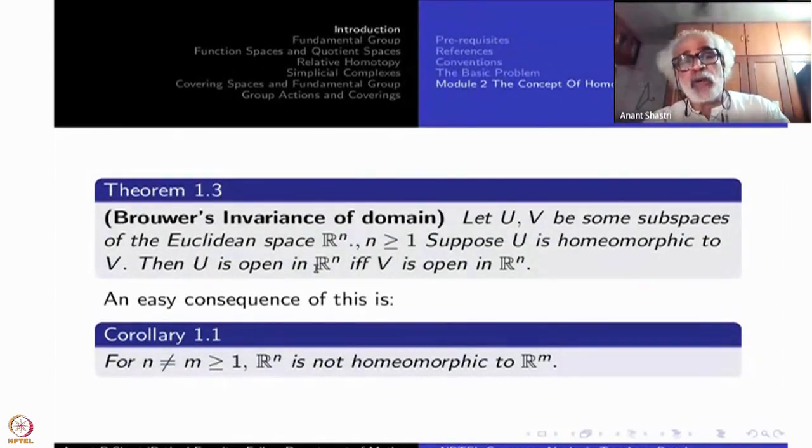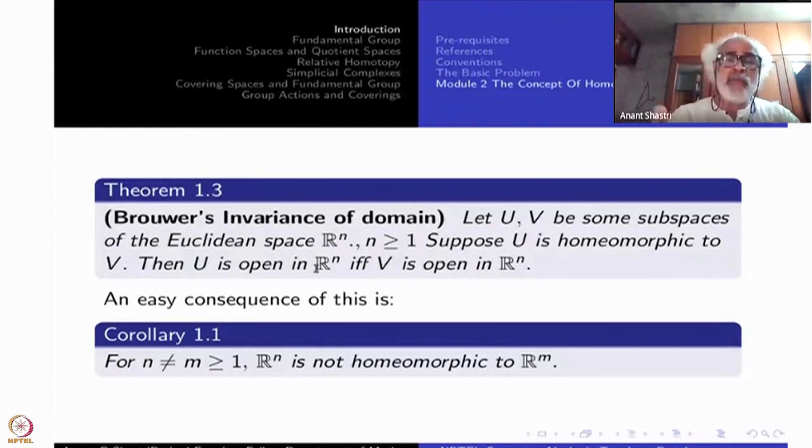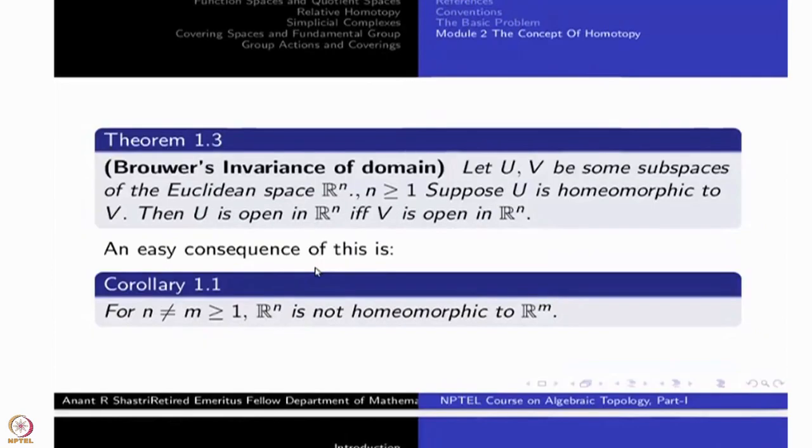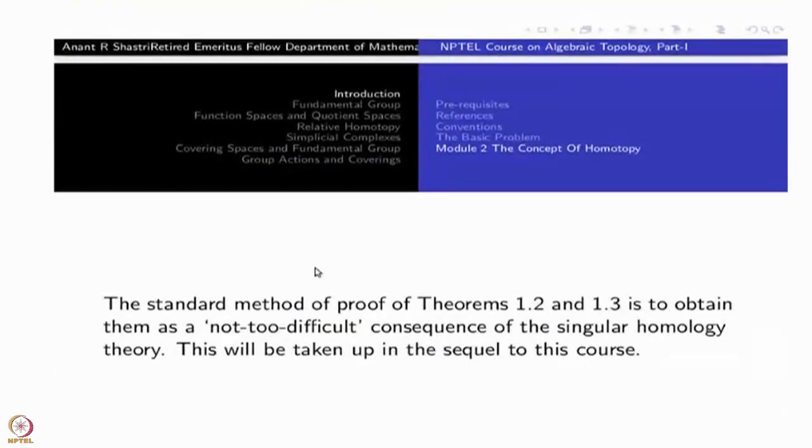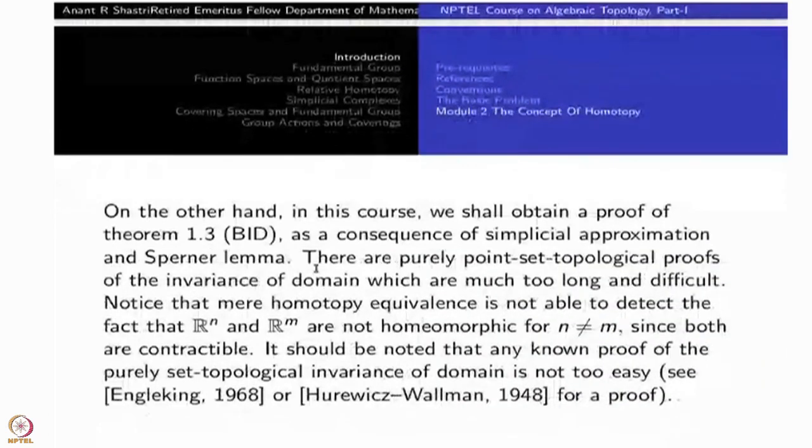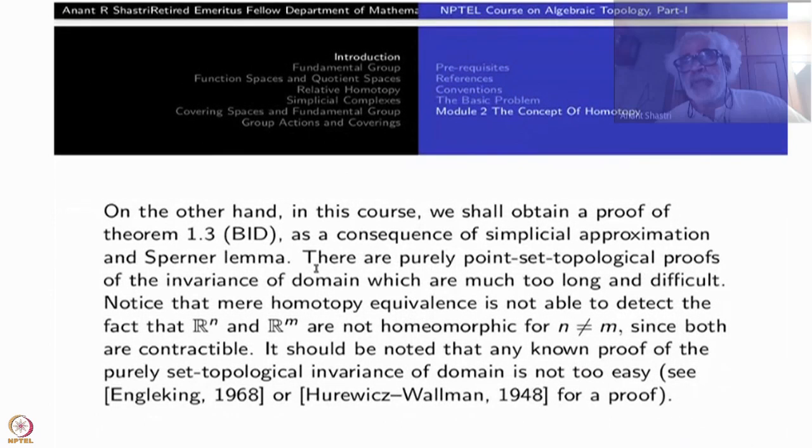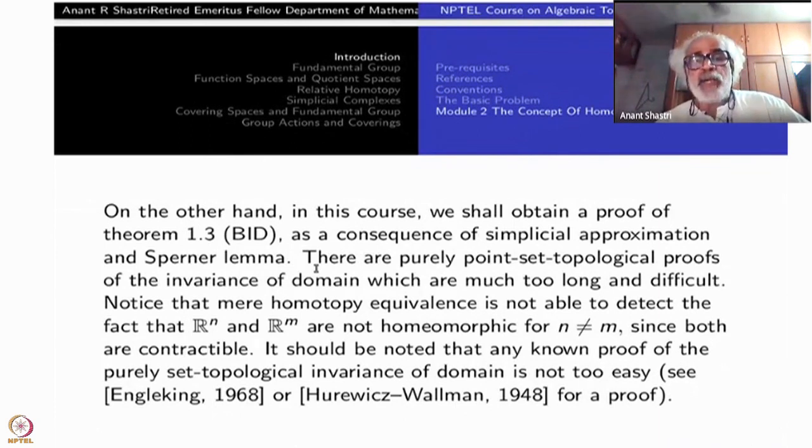This corollary is an easy corollary, the theorem 1.3. An easier method of proof of these two theorems is to obtain them as not too difficult consequences of singular homology theory. The singular homology theory will be taken up in the sequel to this course. On the other hand, in this course, what we shall do? We shall obtain a proof of Brouwer's invariance of domain as a consequence of simplicial approximation and some combinatorial result called Sperner Lemma.